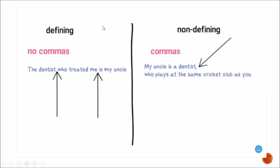Another difference: a defining relative clause does not need commas — we write it as one continuous sentence: 'The dentist who treated me is my uncle.' But with non-defining relative clauses, we use commas: 'My uncle is a dentist, who plays at the same cricket club as you.'